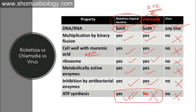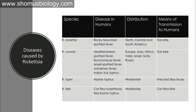Rickettsia can cause many types of disease depending on the species and geographic location. The species list for Rickettsia and their associated diseases — including any vectors — is provided here, as questions are frequently asked about Rickettsia species. Rickettsia rickettsii causes Rocky Mountain spotted fever, distributed in North, Central, and South America, transmitted by tick bite — an arthropod acting as a vector. In contrast, Chlamydia has no arthropod vector — it is transmitted directly from human to human via sexual intercourse.